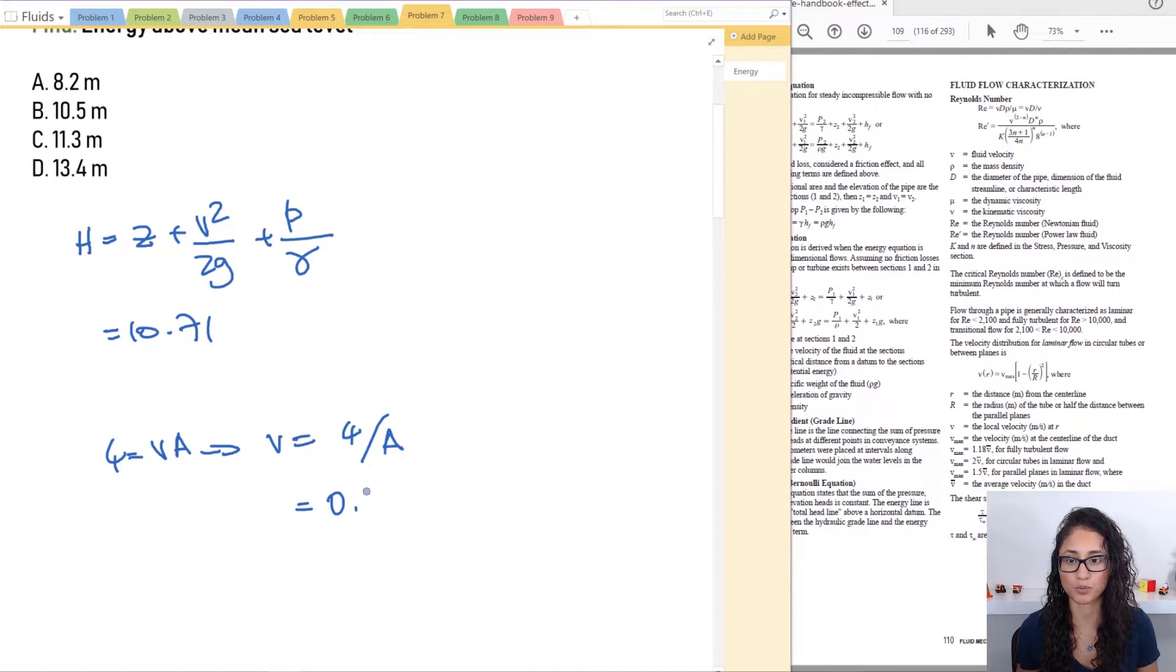Now Q is 0.16 cubic meters per second. Divide that by the area. Now the pipe is circular so we're going to use the area of the circle so I have pi over 4 times the diameter which is 25 but it's 25 centimeters so we have to convert it into meters.